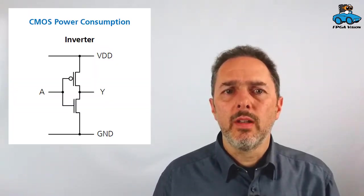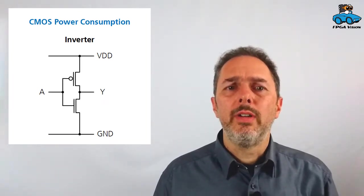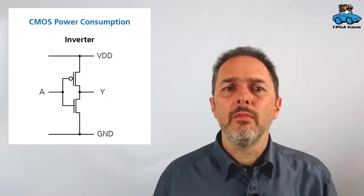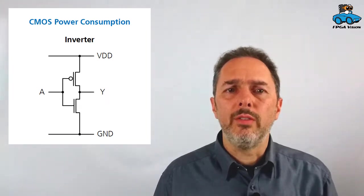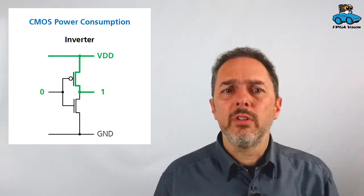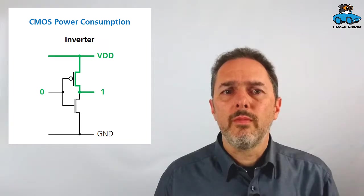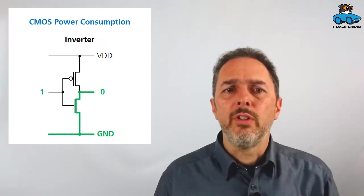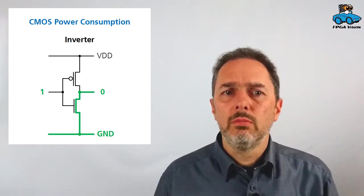So where does the power consumption come from? Let's have a look at the smallest CMOS gate, which is the inverter. It consists of two transistors: the pull-up transistor connecting the output to the supply voltage VDD, and the pull-down transistor connecting the output to ground level zero volts. If the input is zero, then the pull-up transistor is conducting, giving supply voltage to the output which is a logical level of one. When the input is one, the pull-down transistor is conducting, so the output is zero ground voltage.